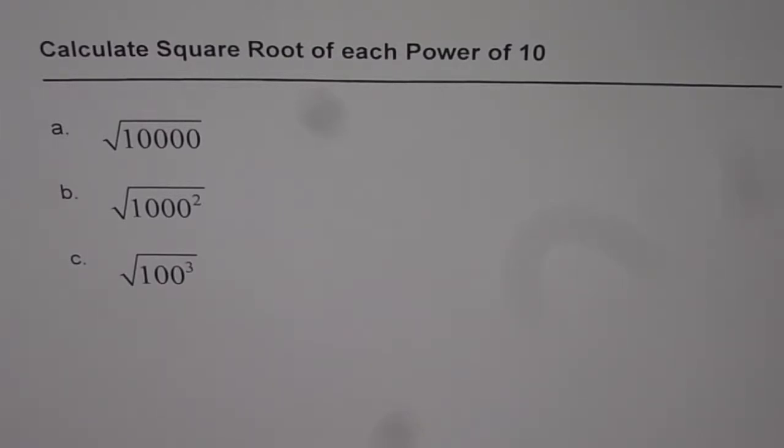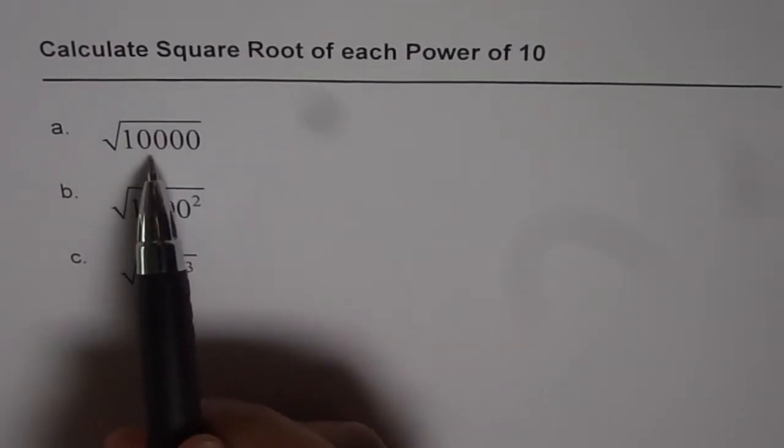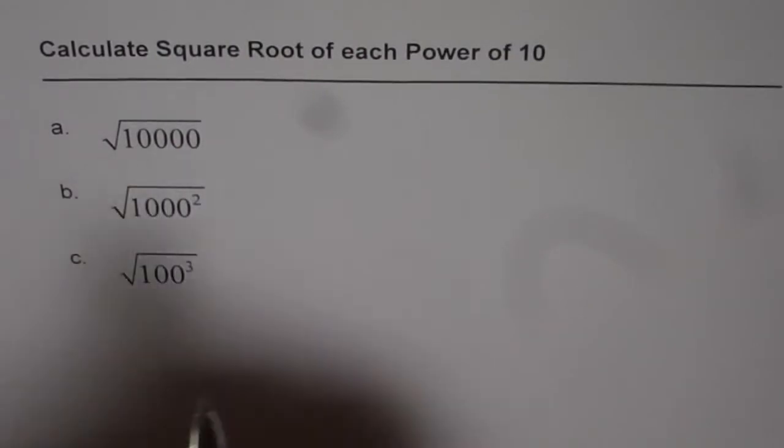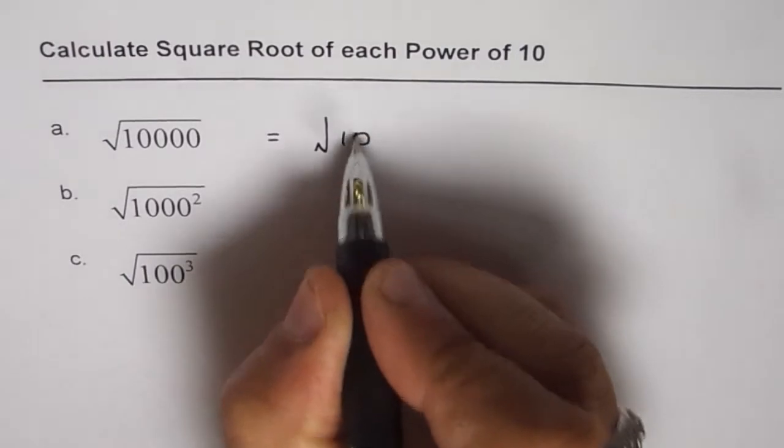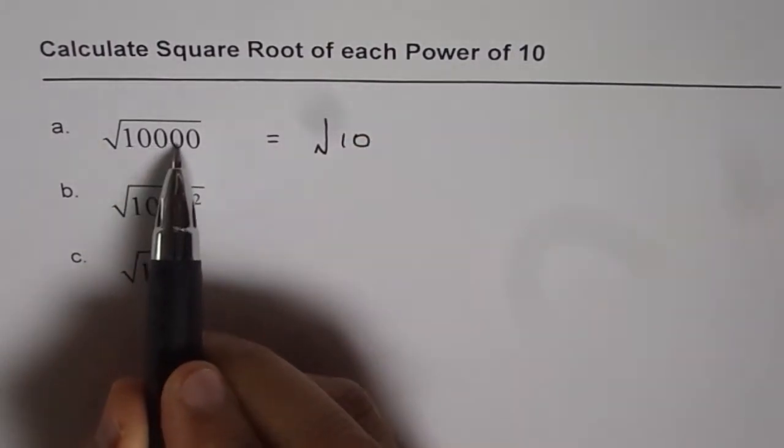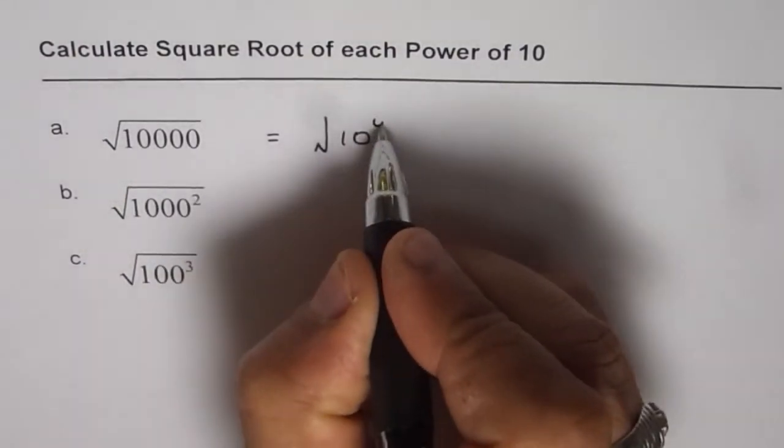Square root of 10,000: as you can see here, you can write this as square root of 10 to the power of 1, 2, 3, 4, so it becomes 10 to the power of 4. That's the square root you need to find.